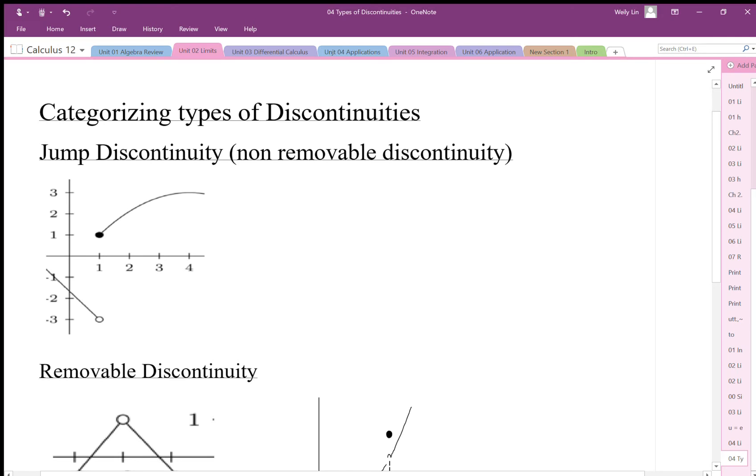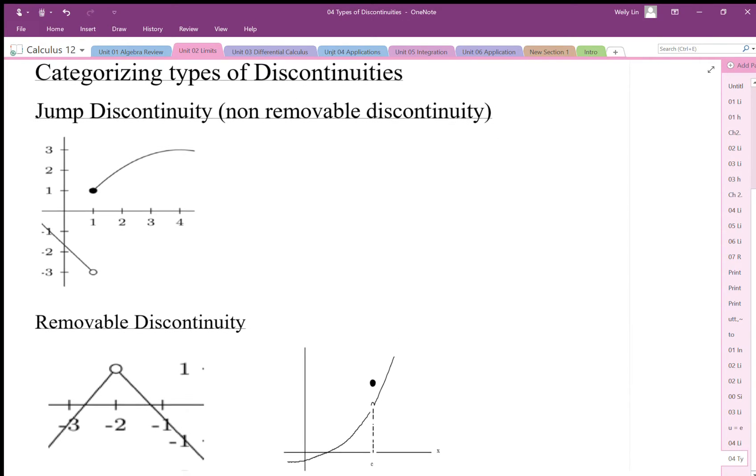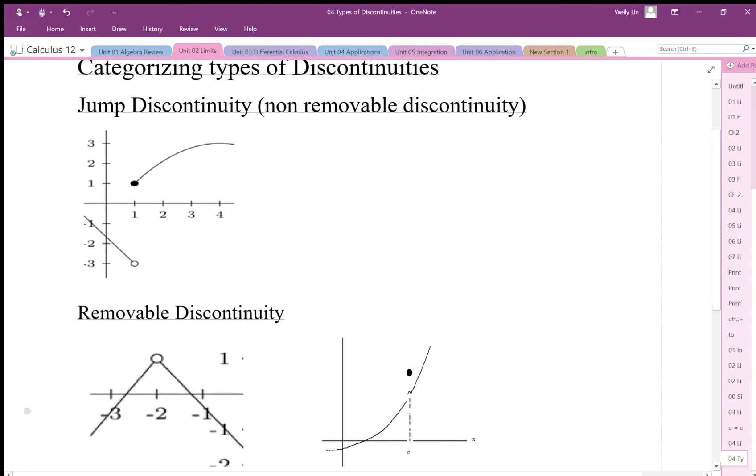So if we want to categorize the different types of discontinuities, there are these ones here. Jump discontinuity, or non-removable discontinuity, is when we have this kind of gap like this. Okay, so if it goes from one and then we jump to the other...